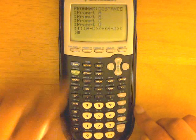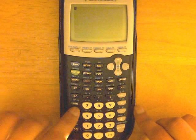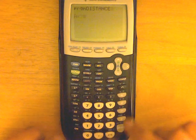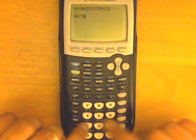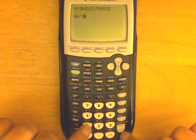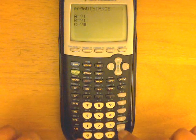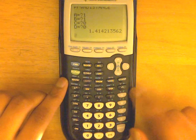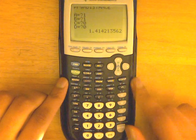And now you can just do second quit, hit program again, slide all the way over to your distance formula, and just enter. Let's say distance from 1 to 1 and 0 to 0, which is 1.41, which is the square root of 2.